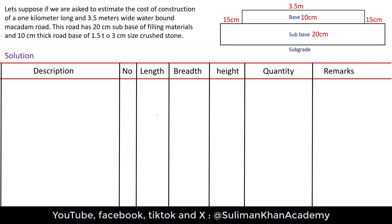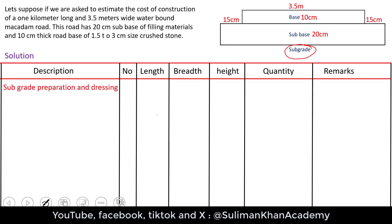Subgrade preparation and dressing is important. If there are trees or rocks, those are removed at this stage. Gradient and camber are considered during subgrade preparation. The subgrade can be the natural ground level, but once prepared it is known as the subgrade. The number is one because we have only one road — the water-bound macadam road — and the length is one kilometer, which is one thousand meters.